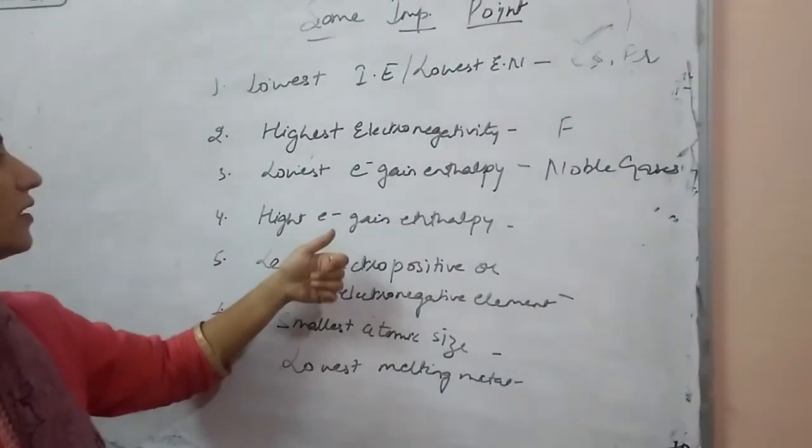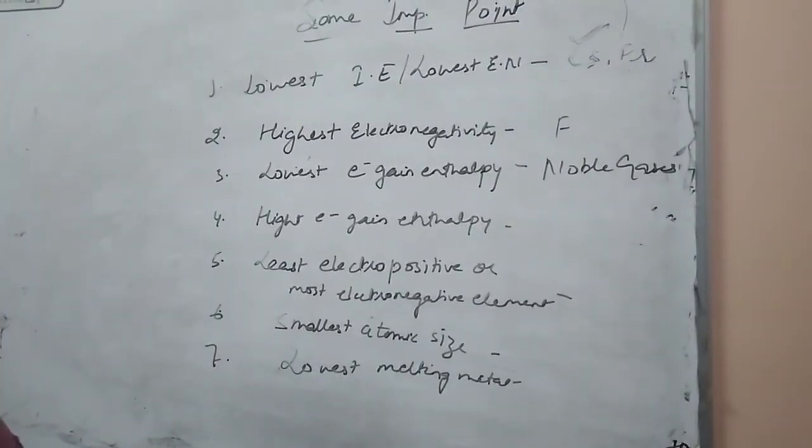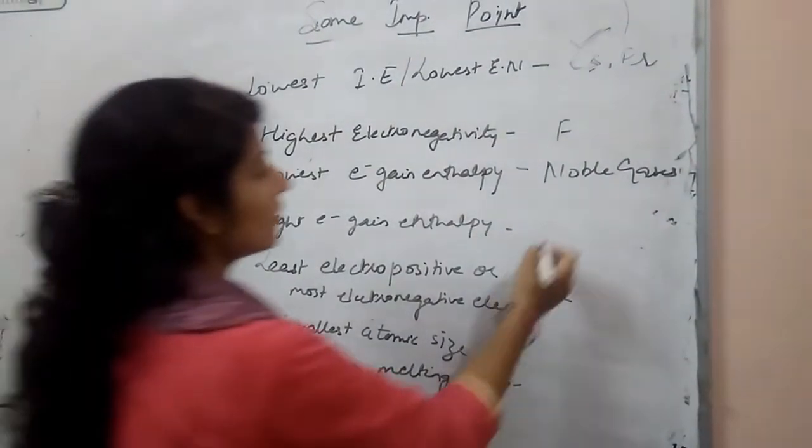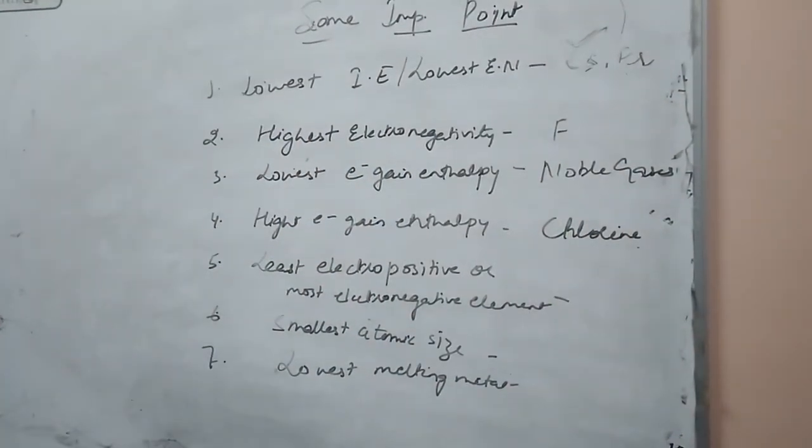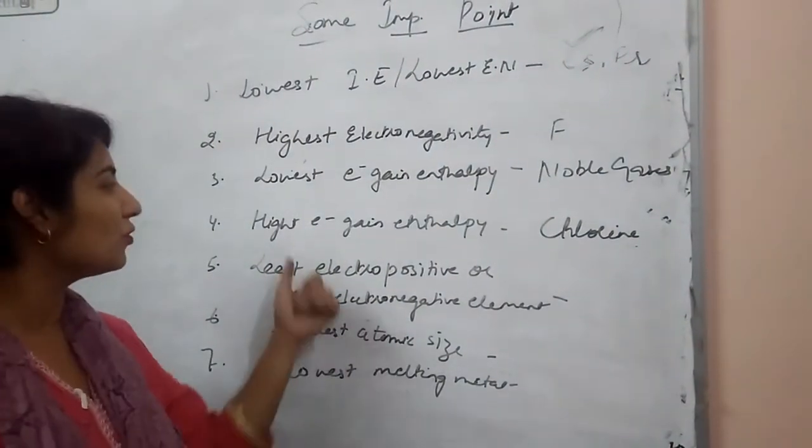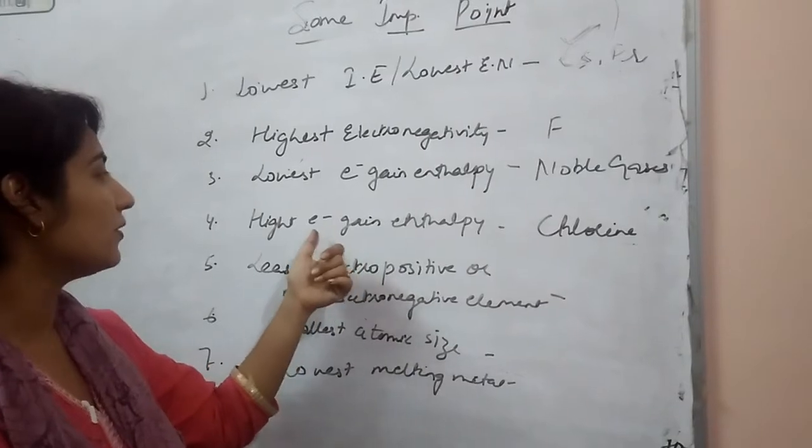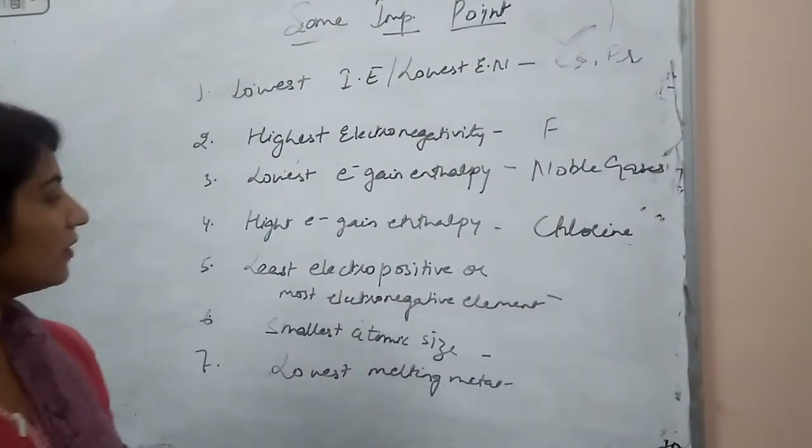Now next is highest electron gain enthalpy. Highest electron gain enthalpy is of chlorine. And generally question is asked between fluorine and chlorine which has more electron gain enthalpy. So right answer will be chlorine.